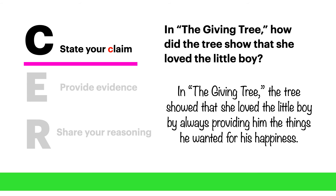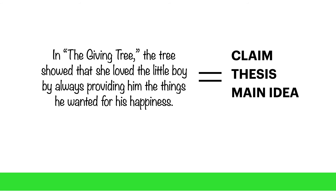So for this example, I'm going to construct my claim around the repetition of the giving that the tree did to the boy. So the completion of my claim is: In The Giving Tree, the tree showed that she loved the little boy by always providing him the things he wanted for his happiness. The first part of my claim includes the text title and restates the question, and the second part completes the idea by giving my answer to the prompting question.